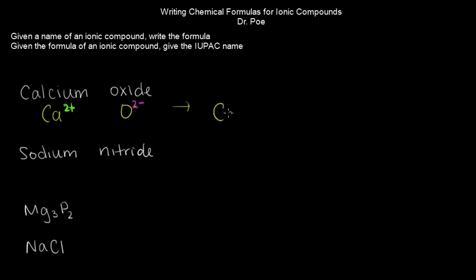So we're going to have CaO. And this 2, the charge of the oxide becomes the number of calcium atoms written as a subscript. So this 2 always means the number of atoms of whatever's before it. And same deal with the calcium charge. It becomes the number of oxygen atoms. But we see both of these are divisible by 2. So we simplify that.